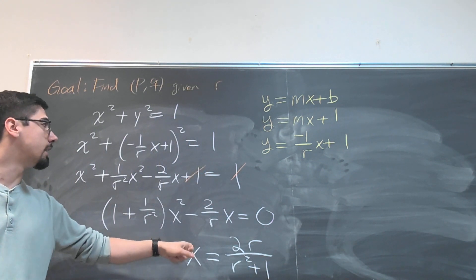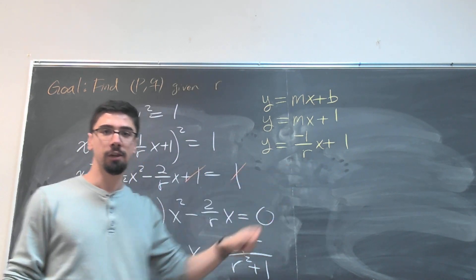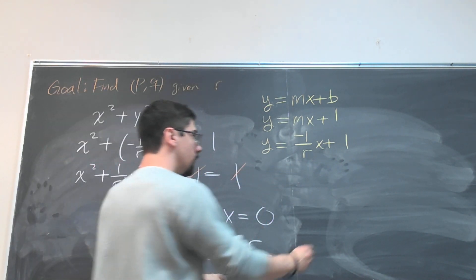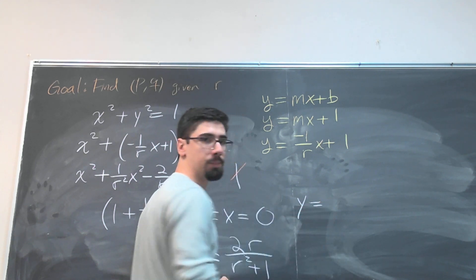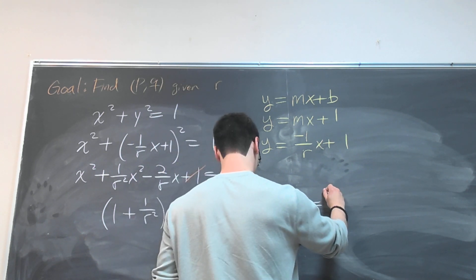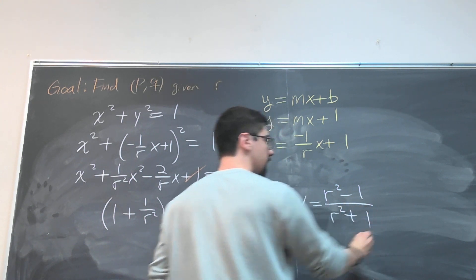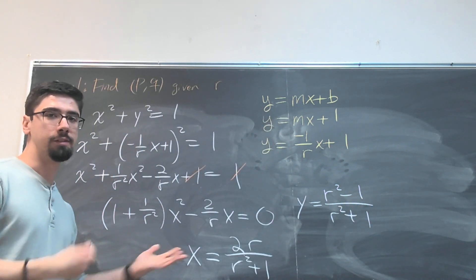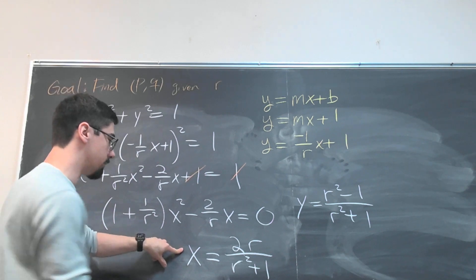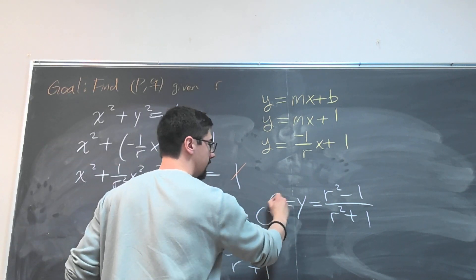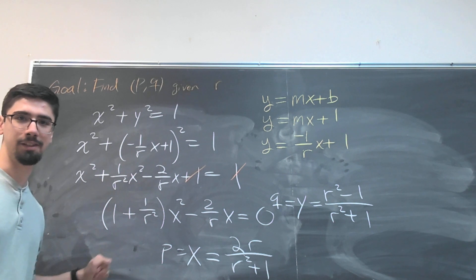And since we have a formula for y in terms of x, when we plug this value in for x over here, we get that y has to be equal to (r² - 1) over (r² + 1). And since these are on a circle, this is going to be our p and this is our q.